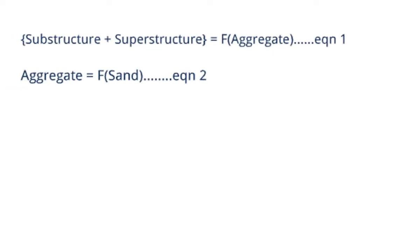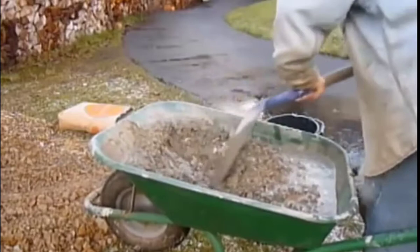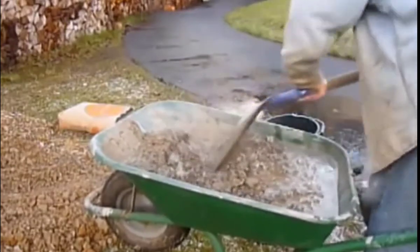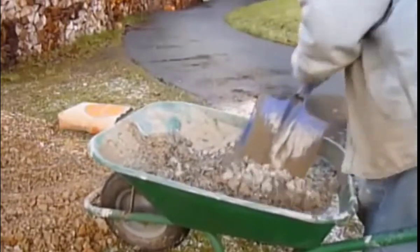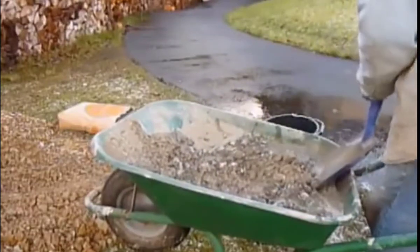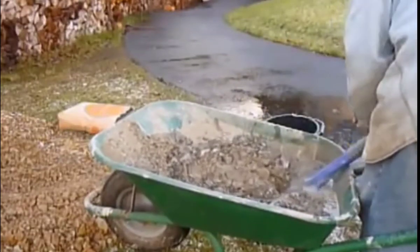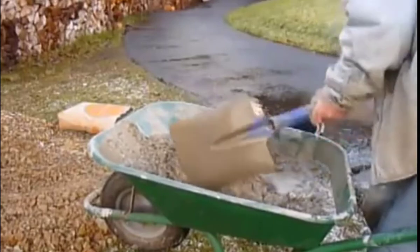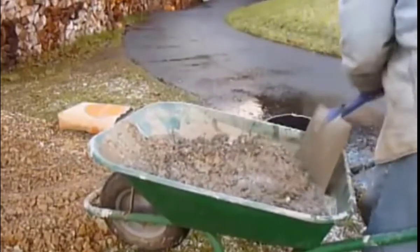The substructure and superstructure of bridges, residential and commercial buildings are functions of aggregate, and aggregate itself is a function of sand. So using the wrong type of sand for a particular job with a correct mix ratio is even more disastrous than using a wrong mix ratio with the correct type of sand. This is why it is essential for a structural engineer to have a vivid knowledge about the different types of sand and where they should be best applied.